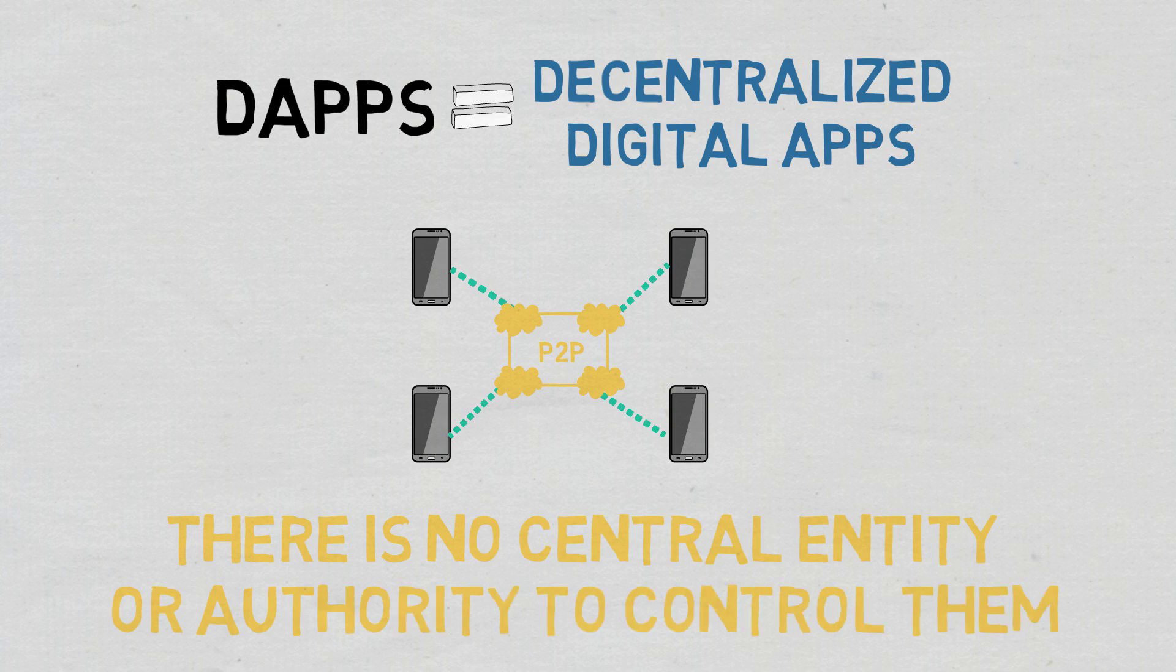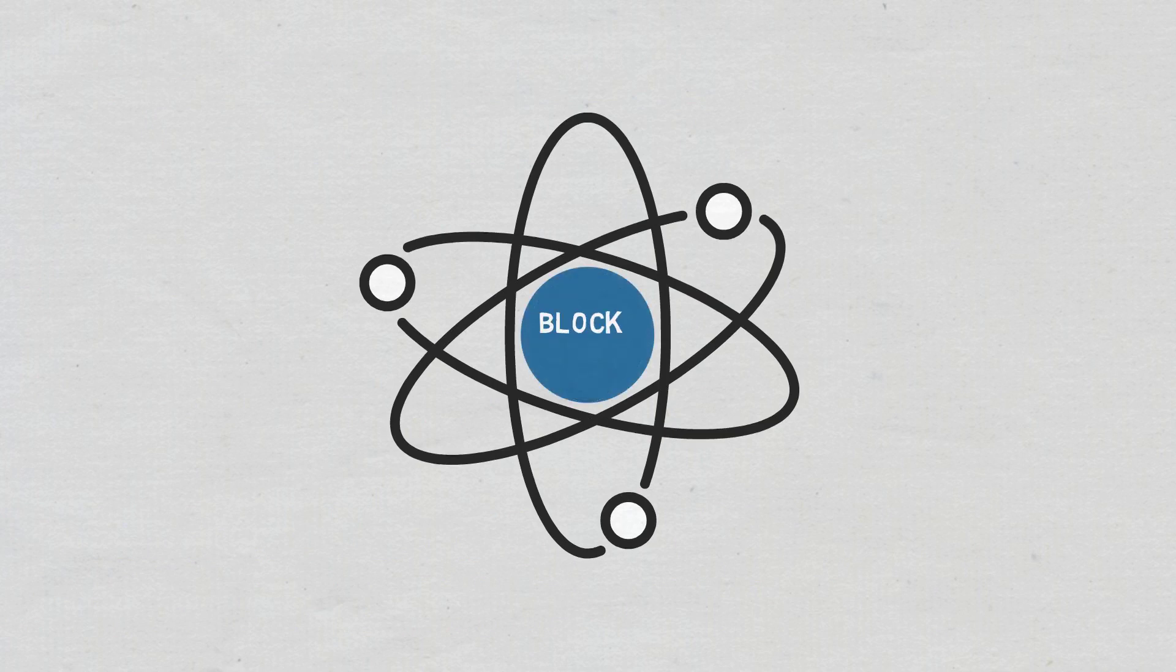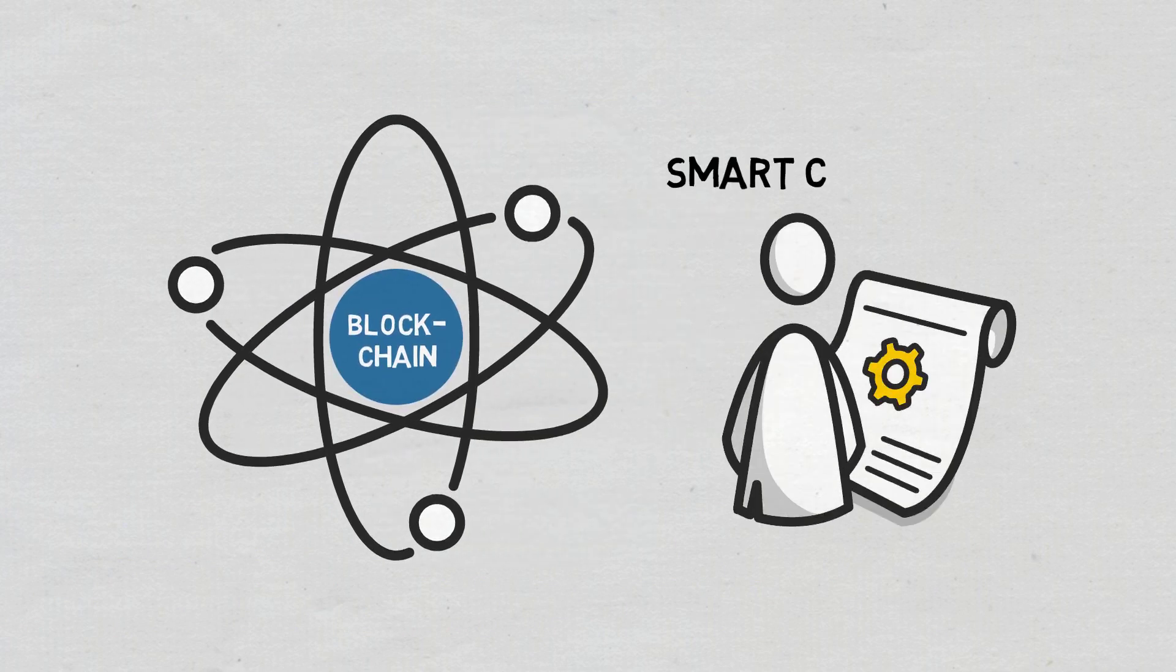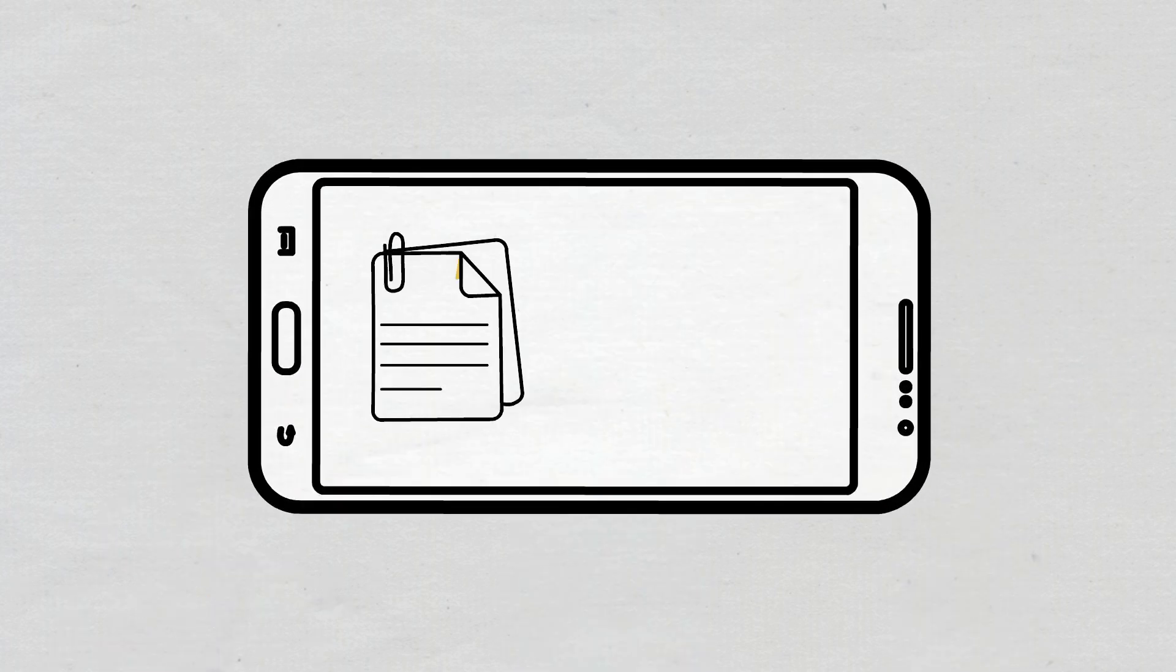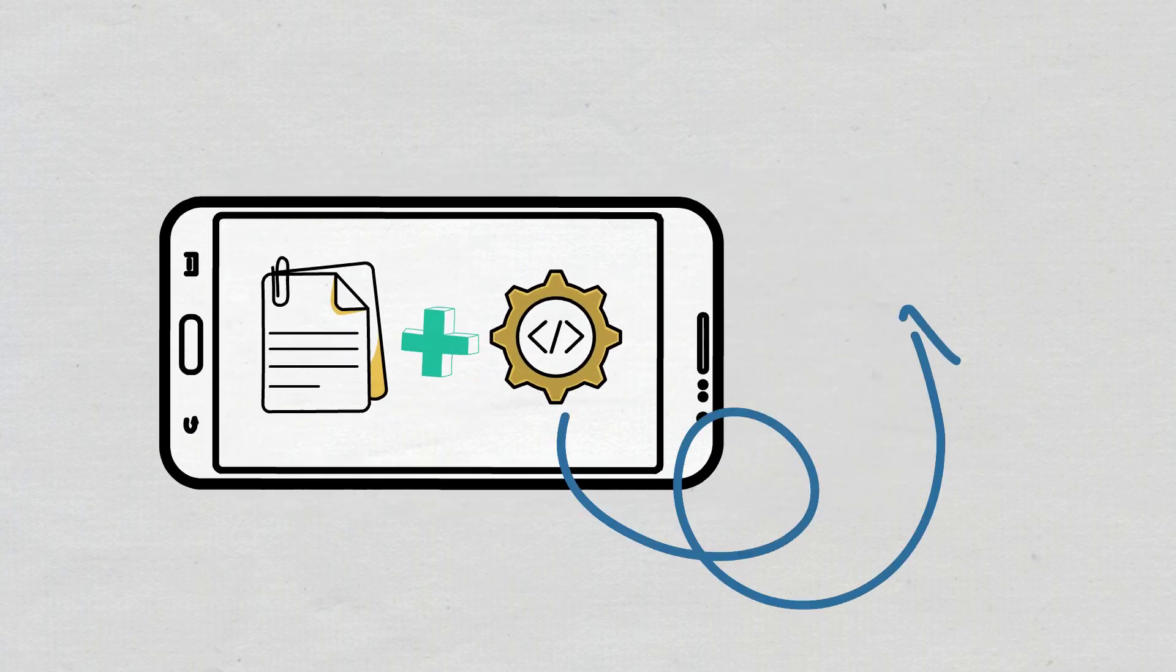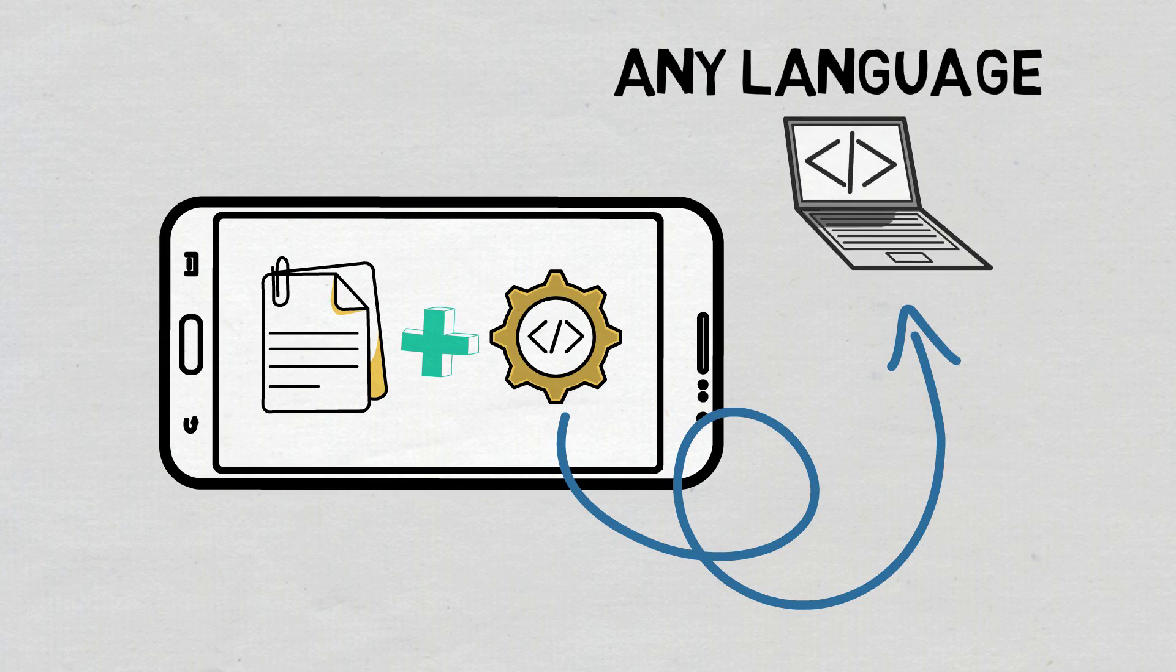The concept of dApps was enabled by blockchain platforms that support smart contracts, with Ethereum being the first of them. DApps combine a smart contract and a front-end user interface, with the front-end code and user interface being written in any language that can make calls to their backend.